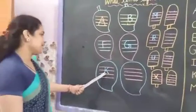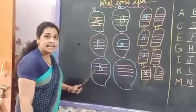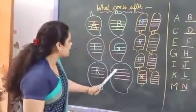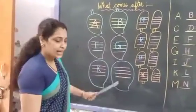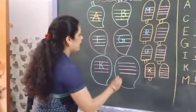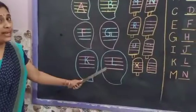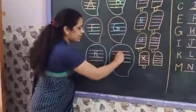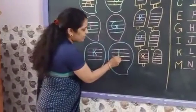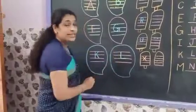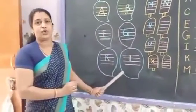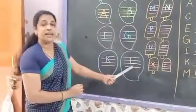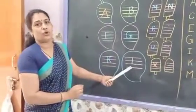And then which letter is this? K. K for kite. After K for kite comes L for lion. How to write L? Standing line and one sleeping line — it's made L. L for lion.